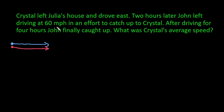So the most important thing here is that the distance that Crystal travels is going to be equal to the distance that John traveled, because we're trying to figure out how long it's going to take or what was Crystal's average speed before John overtook her.